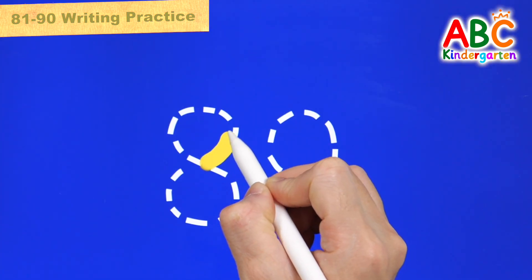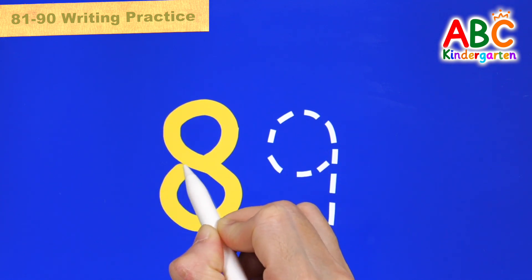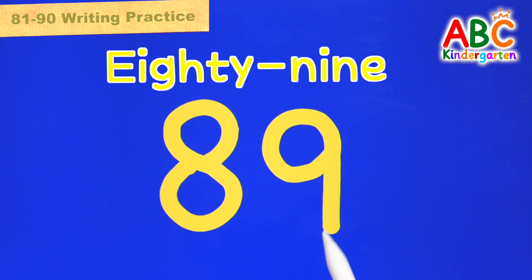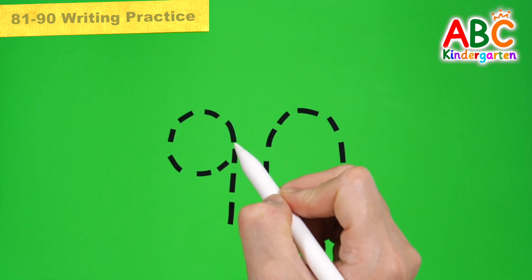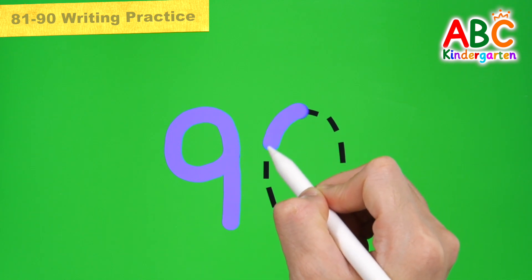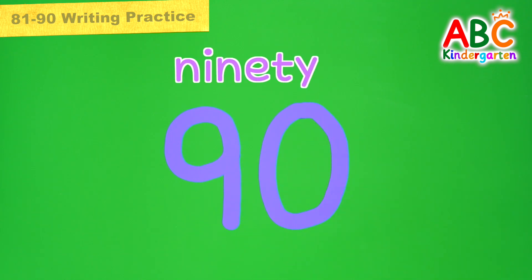Shall we write 89 in yellow over navy blue? 89. Let's write 90 in light purple on green. 90.